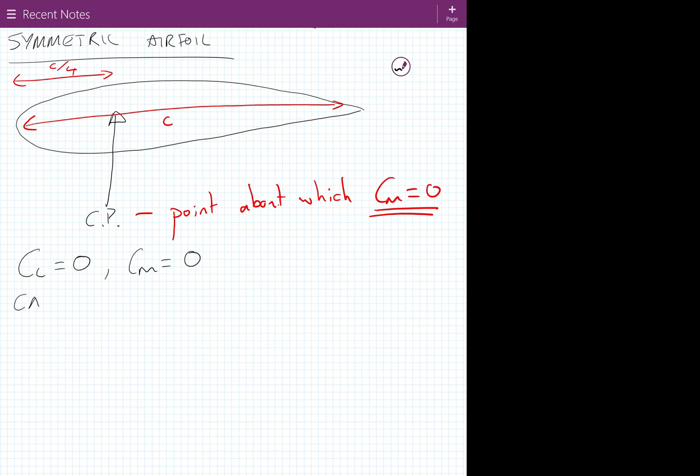But as soon as we have a cambered aerofoil, which is usually the case on aircraft, for the main wing section certainly, so this is going to be an airfoil section that has some camber on it. Obviously, I've exaggerated this. Well, then the centre of pressure drifts. So there's no fixed centre of pressure position. As the angle of attack increases, the centre of pressure might drift towards the leading edge.